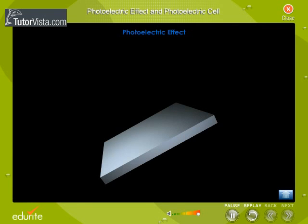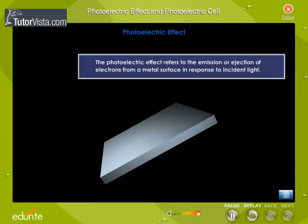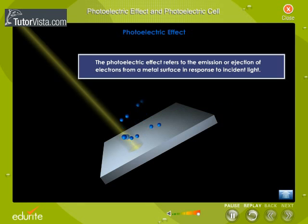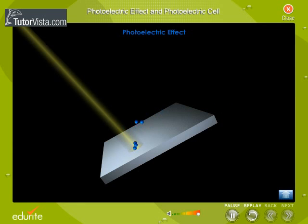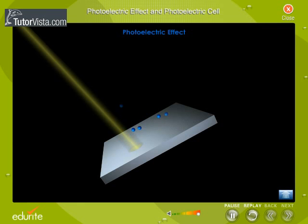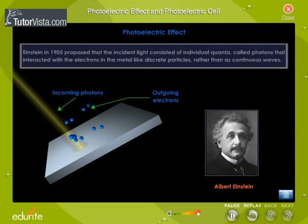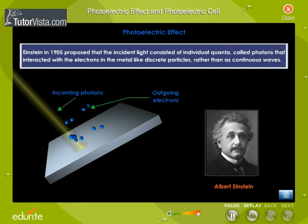The photoelectric effect refers to the emission or ejection of electrons from a metal surface in response to incident light. Energy contained within the incident light is absorbed by electrons within the metal, giving the electrons sufficient energy to be knocked out of or emitted from the surface of the metal.